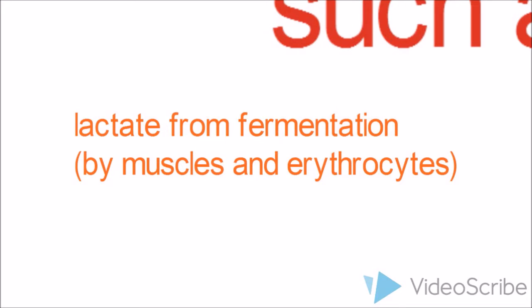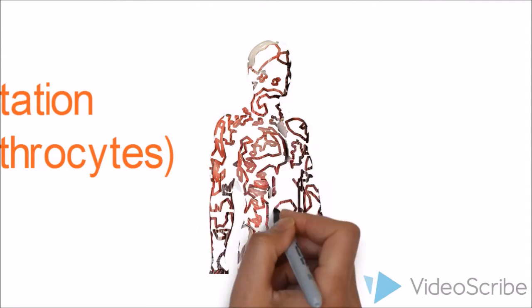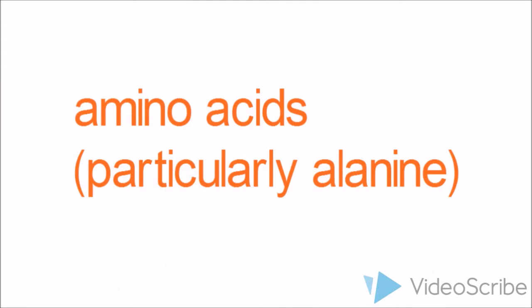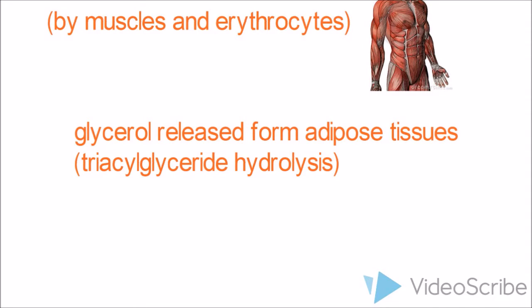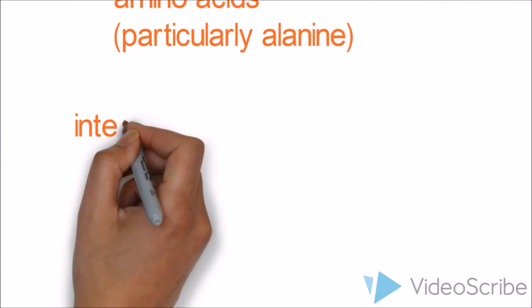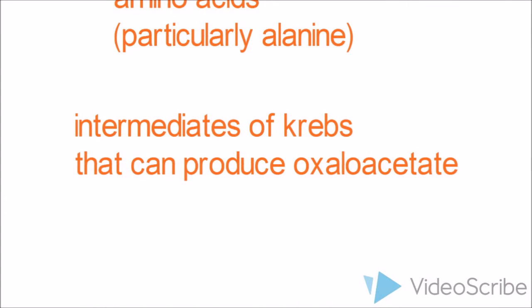The non-carbohydrate precursors include: lactate from anaerobic fermentation by muscles and erythrocytes; glycerol from triacylglyceride hydrolysis in adipose tissue; amino acids; and intermediates of the Krebs cycle such as oxaloacetate. These four - lactate, glycerol, amino acids, and Krebs cycle intermediates - are used as non-carbohydrate precursors to start gluconeogenesis.